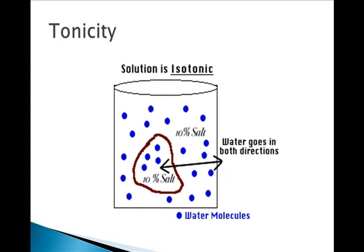In an isotonic solution, the solution has equal concentrations of solutes on both sides of the cell membrane. So there's no net movement of water, but water is always moving in and out — just moving in and out at the same rate.